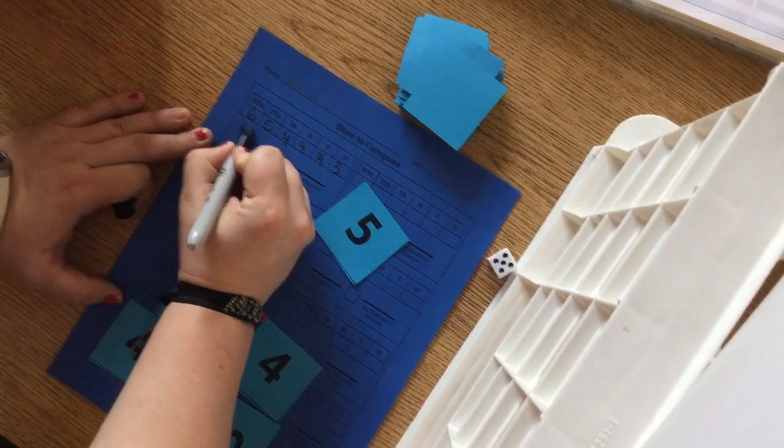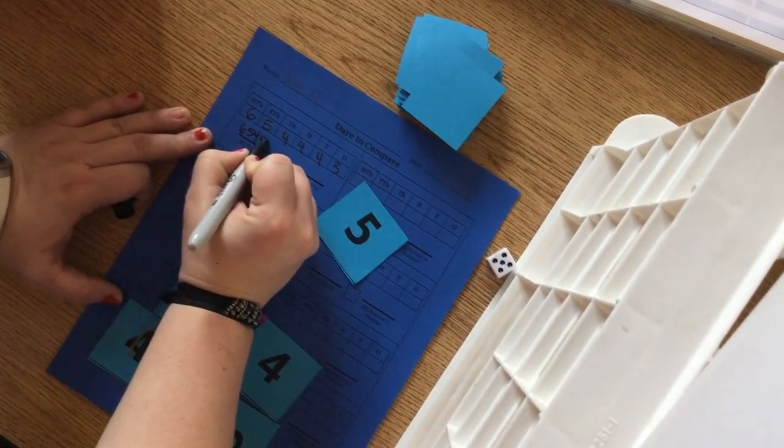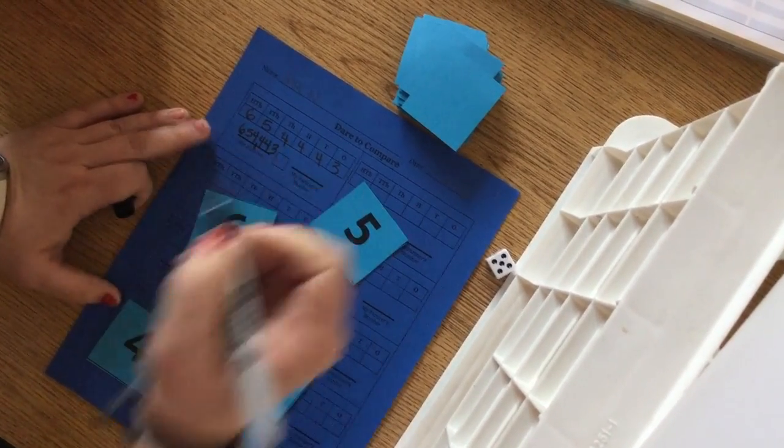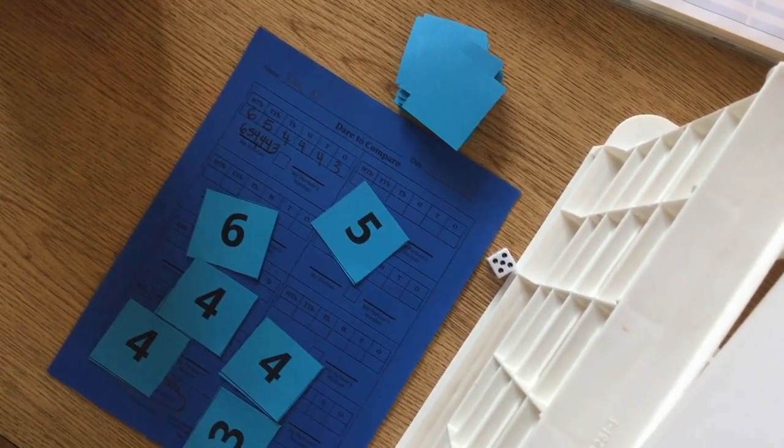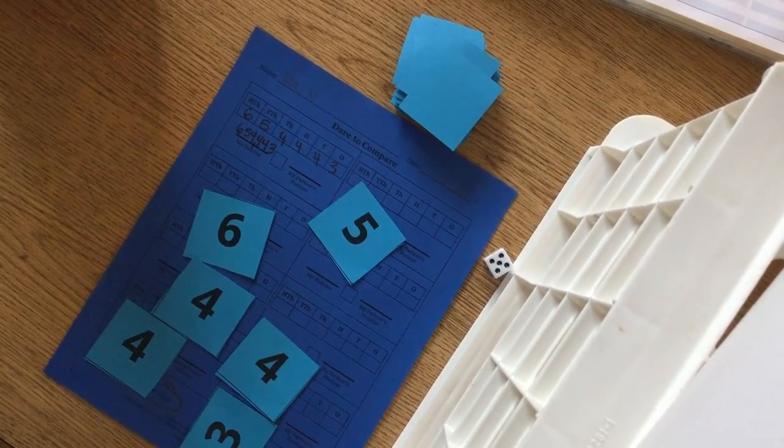Okay, I'm going to write it under my number. Remember to use my comma. So I chose 654,443.